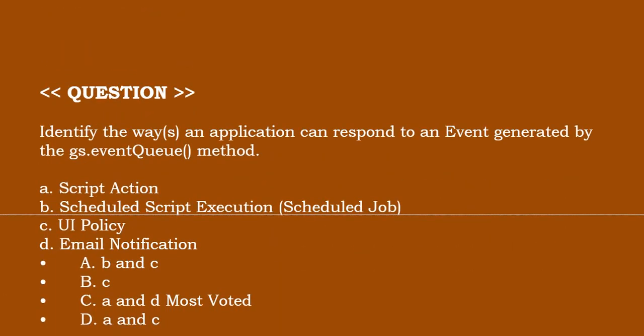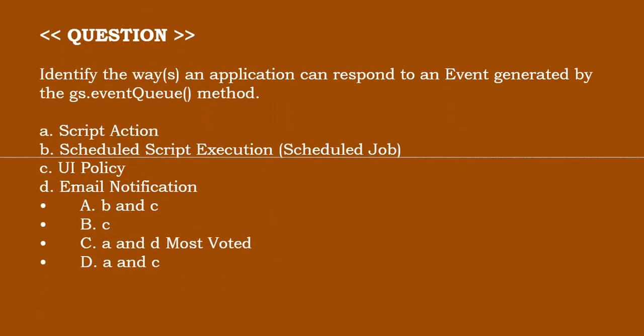Next one. Identify the ways an application can respond to an event generated by a user: business event, script action, scheduled script execution, UI policy, email notification. You can read the given options. The correct answer is option C.